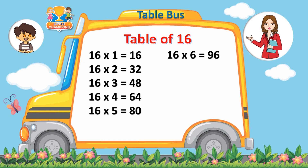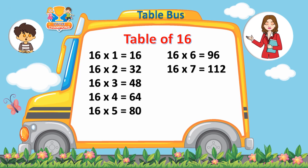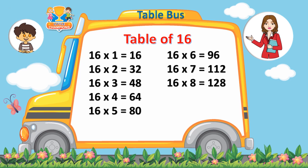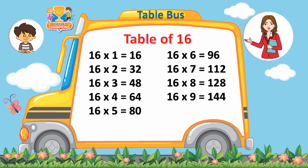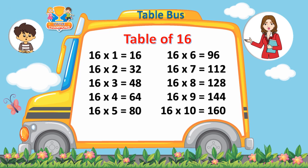16 sevens are 112. 16 eights are 128. 16 nines are 144. 16 tens are 160.